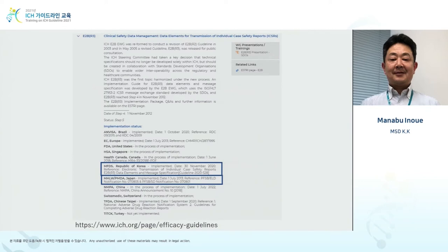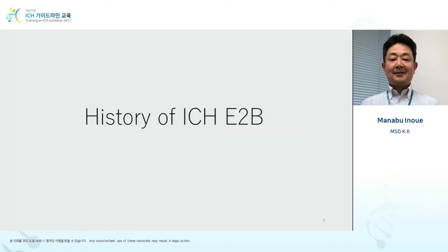This slide is from the ICH E2 website, specifically about E2B R3. As you can see from the slide, it talks about the implementation status by each country. For example, EU, Korea, and Japan are highlighted and the implementation status are explained.